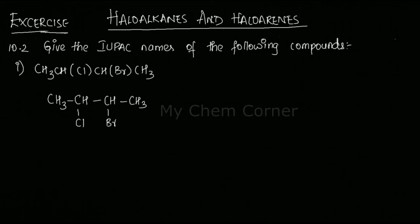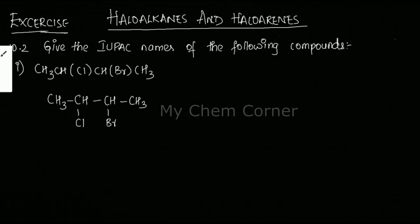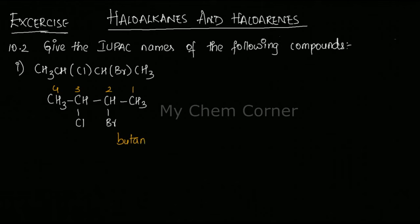When two halogens are present, you give priority to the halogen with the highest atomic number. Between Cl and Br, bromine has the higher atomic number, so you start numbering such that Br gets the lowest number. The longest chain is four carbons — butane. At position 2 you have bromo, at position 3 you have chloro. In alphabetical order, the name is 2-bromo-3-chlorobutane.